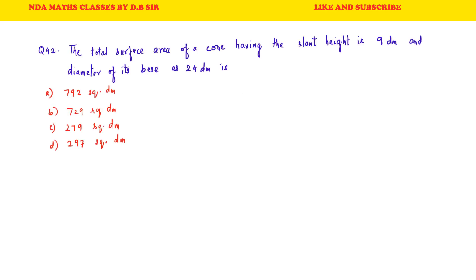Question 42: The total surface area of a cone having slant height 9 decimetre and diameter of its base is 24 decimetre. If we look at this, the slant height is given as 9 decimetre and diameter is 24, so radius is 12. But this is not possible — the base radius 12 is greater than the slant height 9. In a right angle triangle, the hypotenuse (slant height) must be greater than the base. So the data given is incorrect.